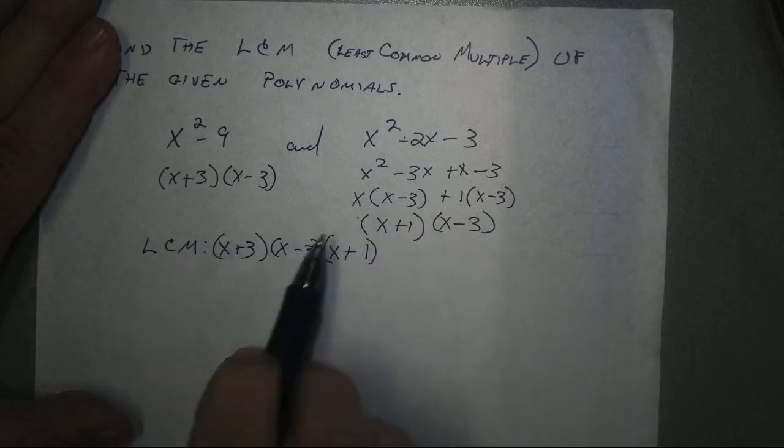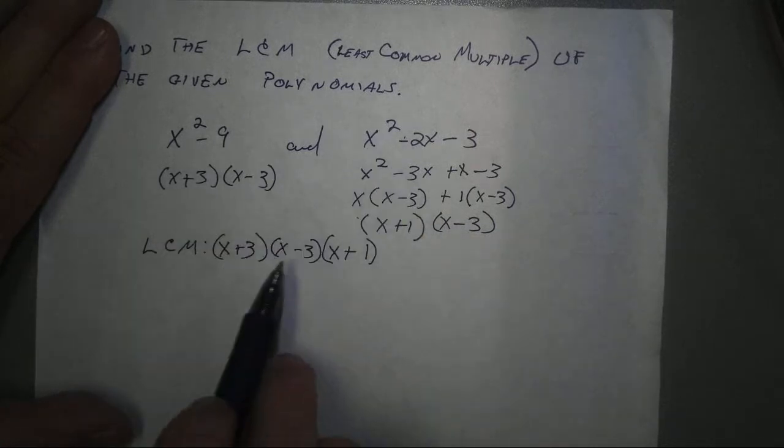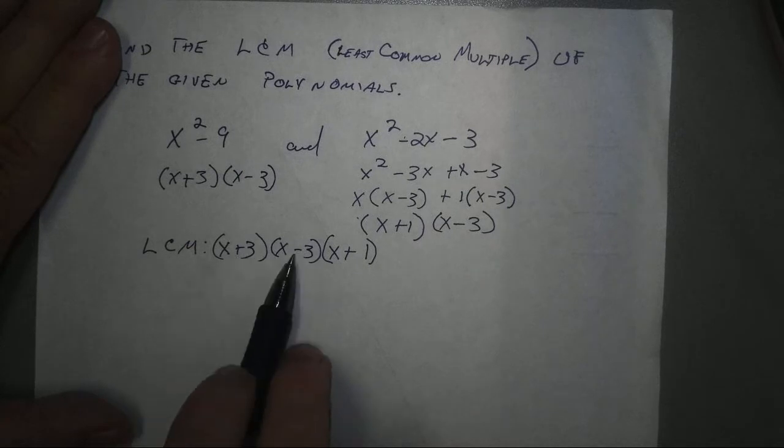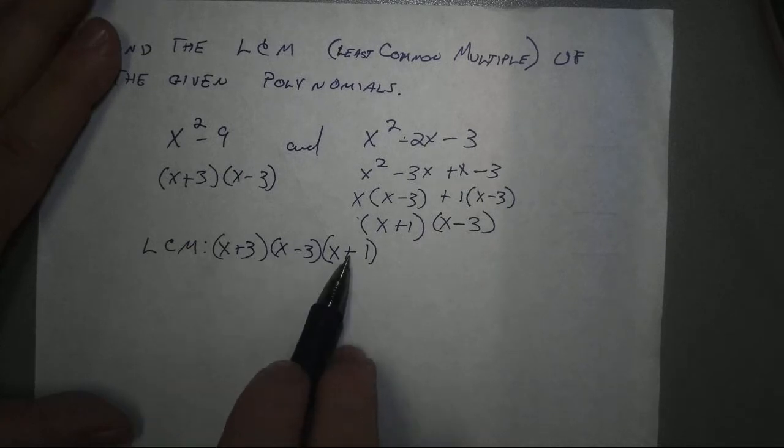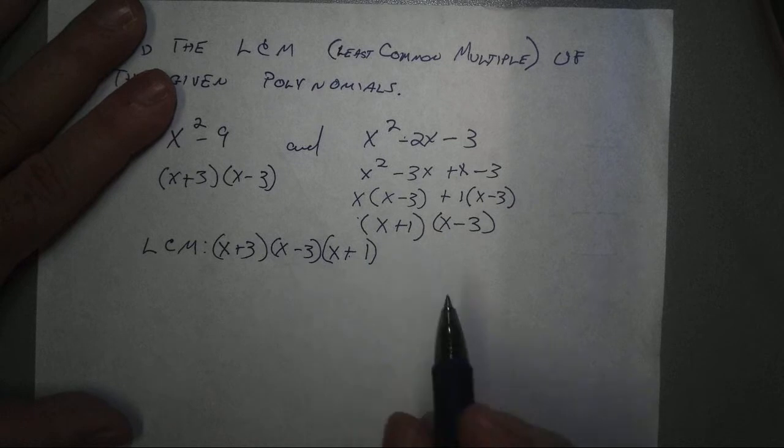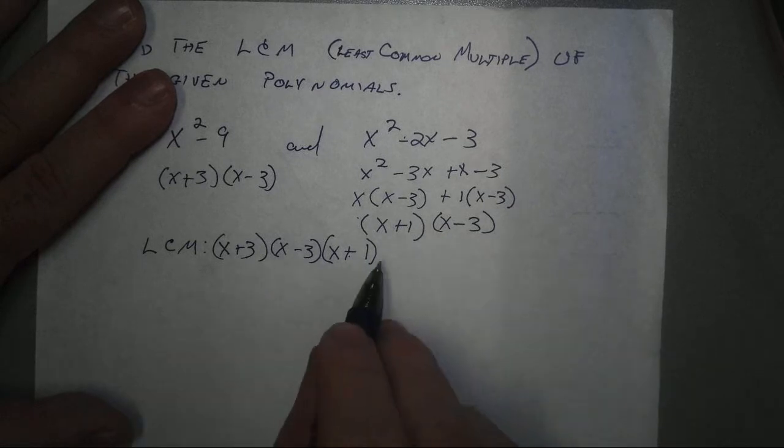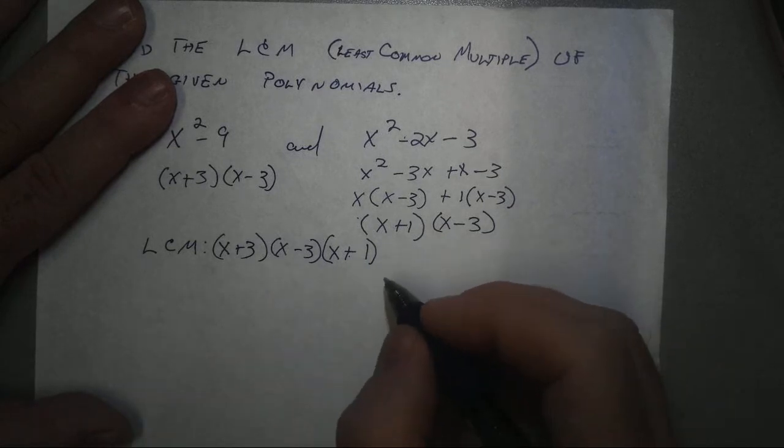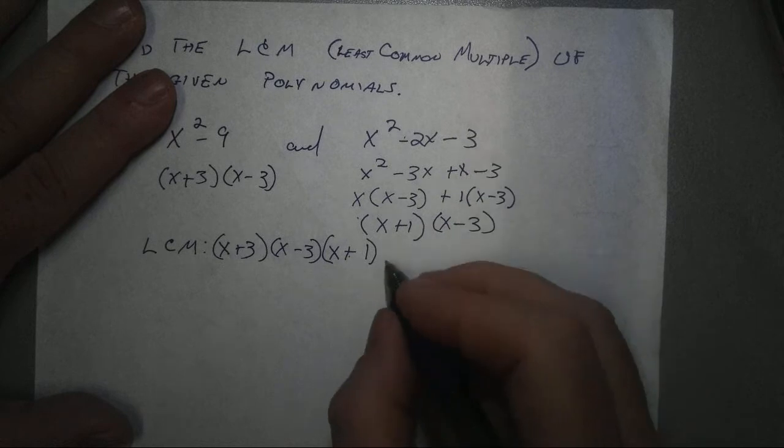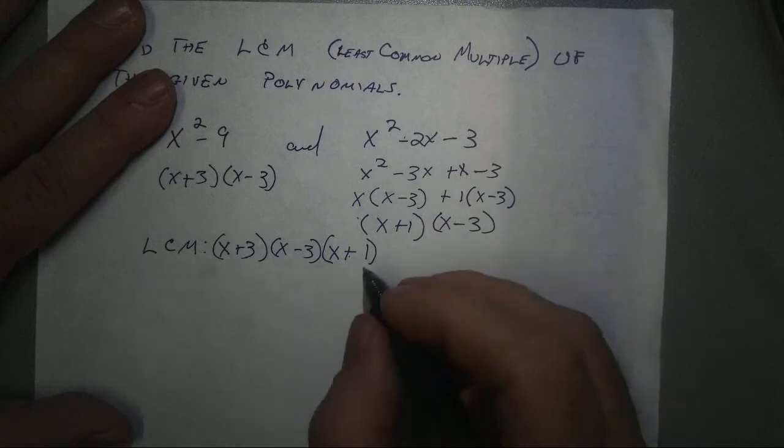So, the least common multiple of these two quadratics is the cubic expression, x plus 3, times x minus 3, times x plus 1. And I'm going to leave it in factored form, although, depending on the question, it might specify to either leave it in factored form or to simplify by expanding it out.